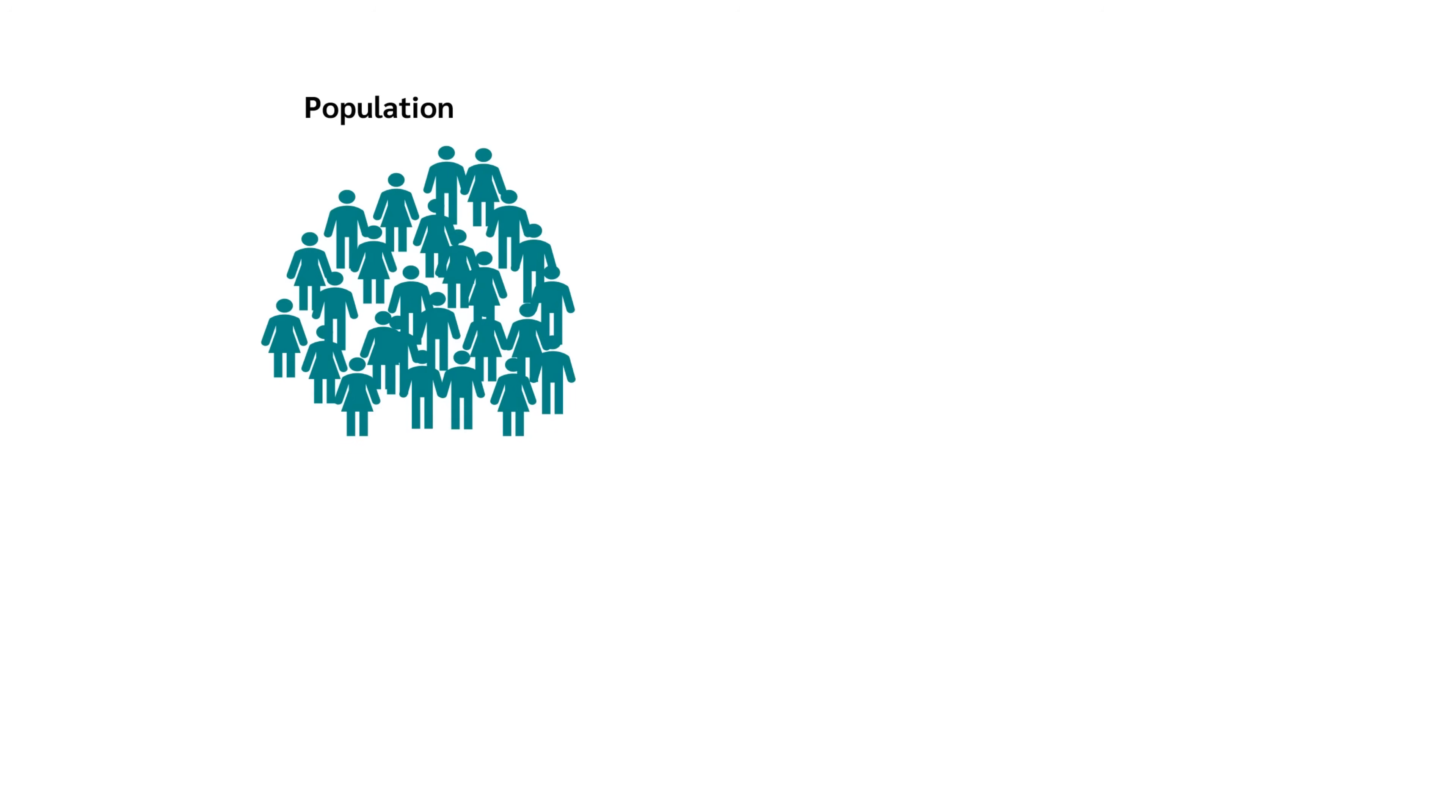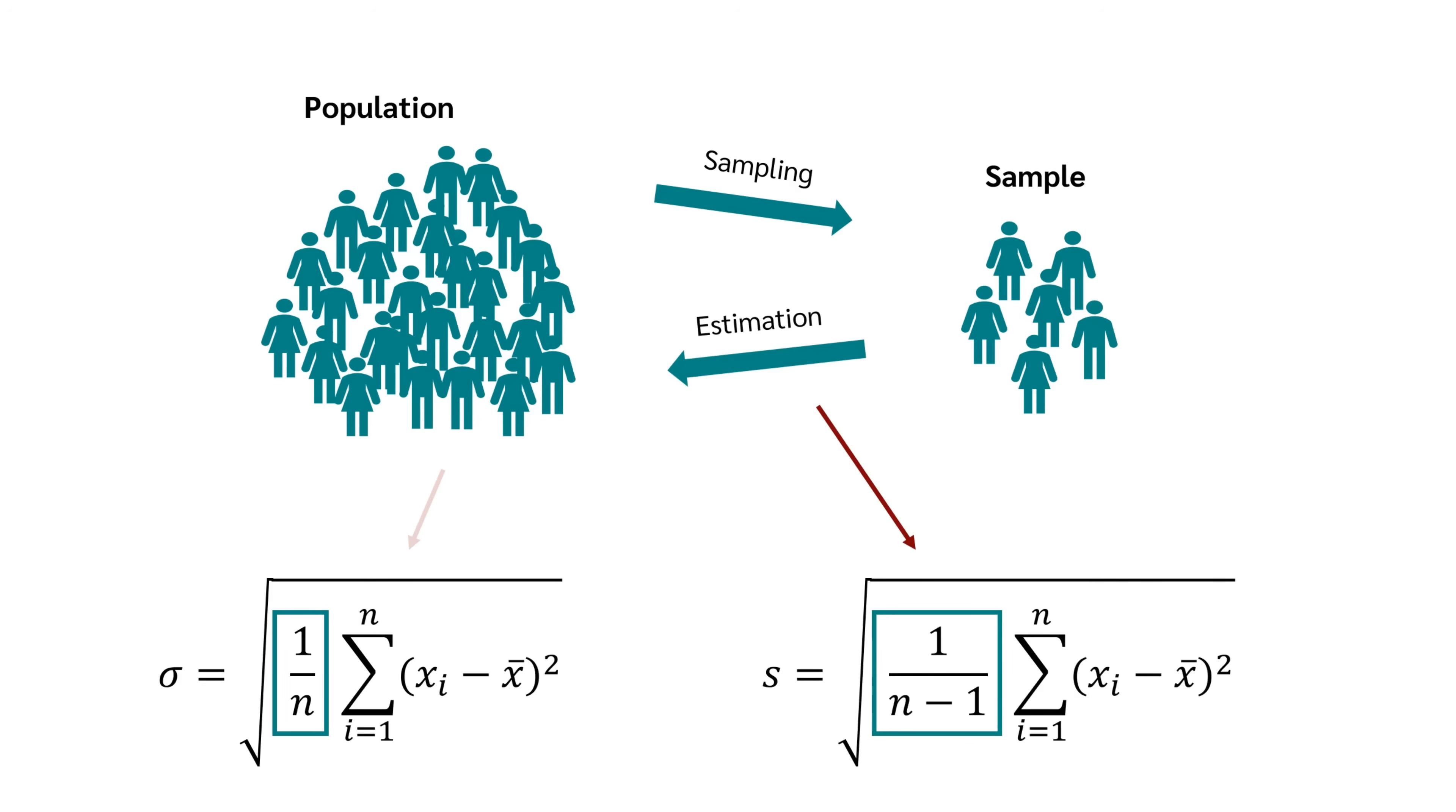Usually, you want to know the standard deviation of the whole population. For example, you want to know the standard deviation of height of all American professional soccer players. Now, if you had the height of all American soccer players, you would take this equation with 1 divided by n. However, it is usually not possible to investigate the entire population, so you take a sample. Then you use this sample to estimate the standard deviation of the population. In that case, you use this formula. Therefore, whenever you have data of the whole population and you want to calculate the standard deviation for just this data, you use 1 divided by n.